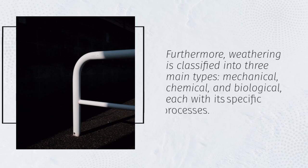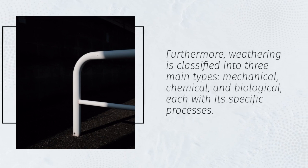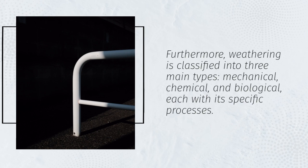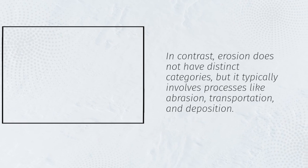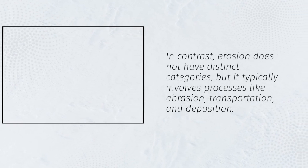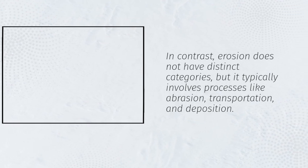Furthermore, weathering is classified into three main types—mechanical, chemical, and biological—each with its specific processes. In contrast, erosion does not have distinct categories, but it typically involves processes like abrasion, transportation, and deposition.